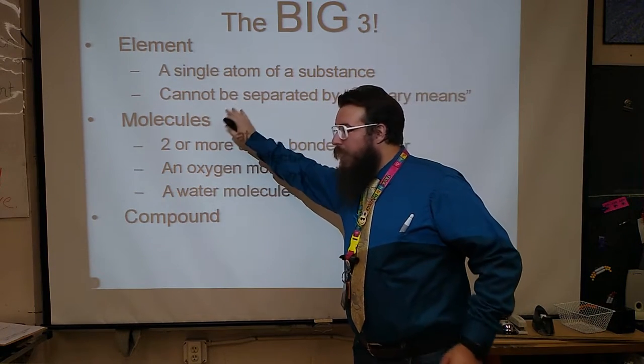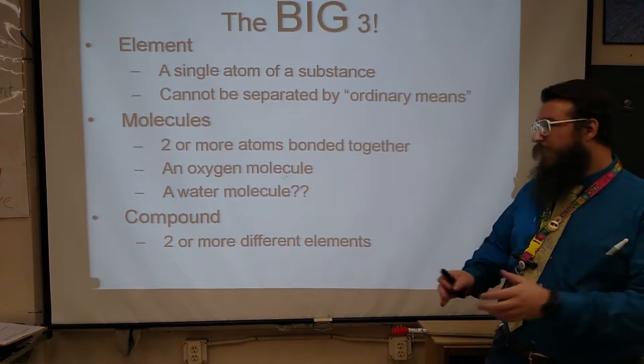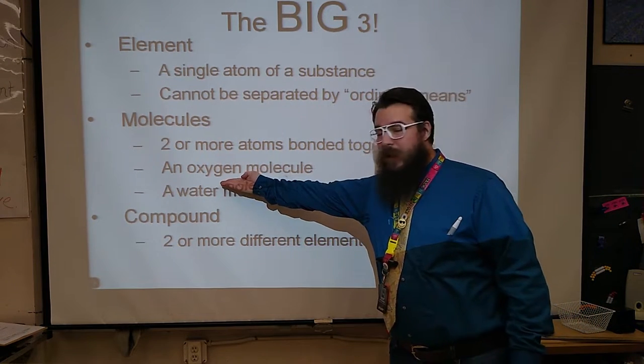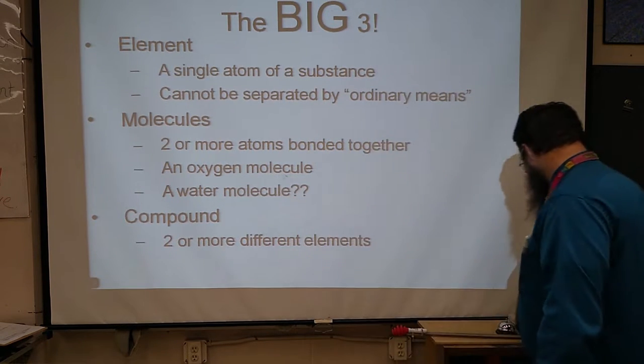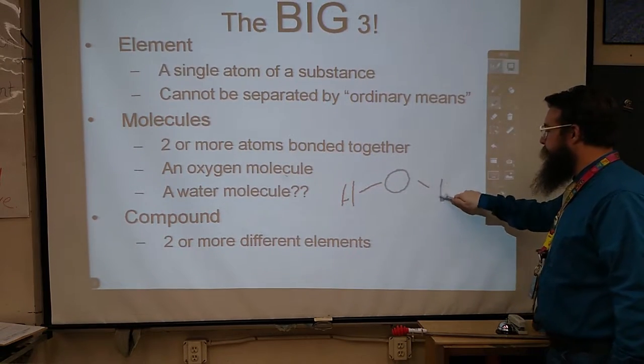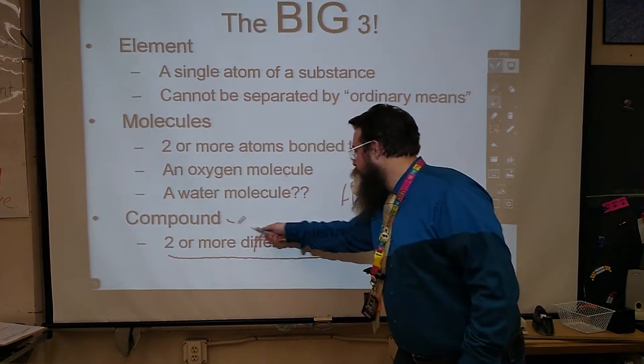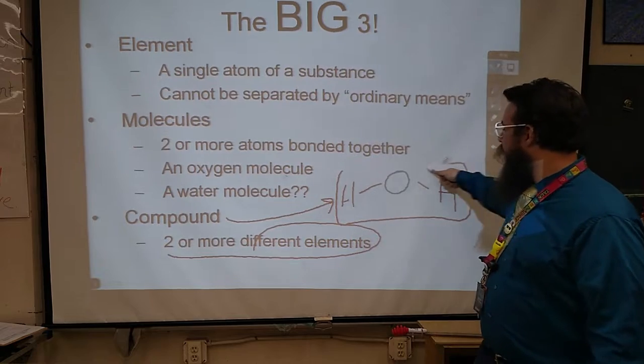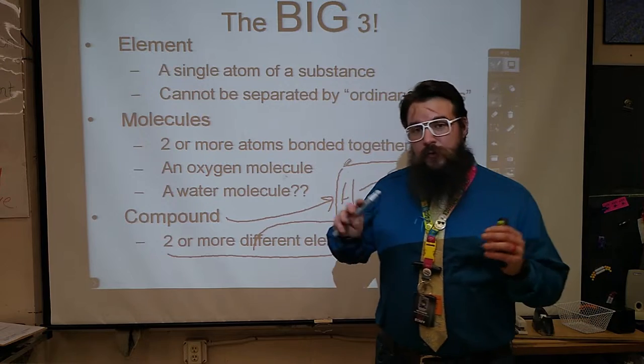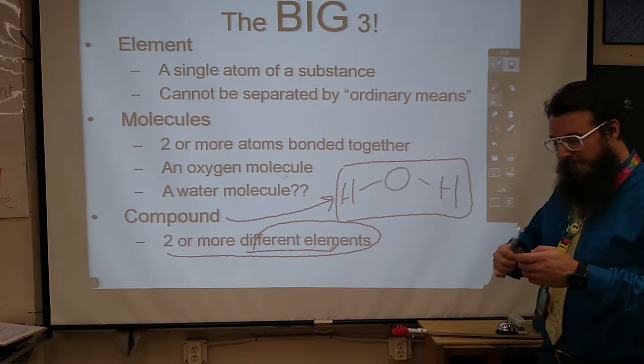Now, we could call these molecules a compound if and only if we have two or more different elements. For example, the oxygen molecule here, that would not be a compound, just a regular molecule because it's made out of oxygen and more oxygen. However, a water molecule has hydrogen and oxygen. So now we have two or more different elements. So the water molecule would also be a compound. Anytime you have any substance, any mixture made of two or more different elements, we call that a compound.